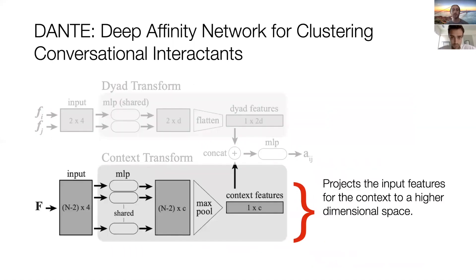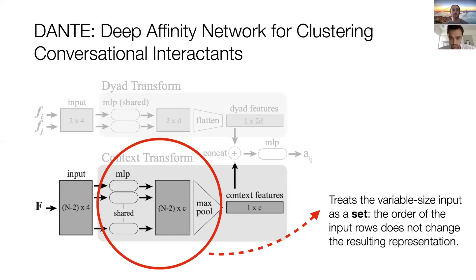We also input the feature vectors for the rest of the participants into the context transform, which outputs a high-dimensional representation of the context features. While a standard multilayer perceptron could not handle a variable number of context participants and imbue meaning on their ordering, the key idea behind the context transform is the use of the symmetric max function to aggregate context participants' high-dimensional features into an overall context feature vector.